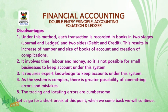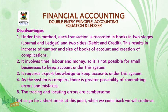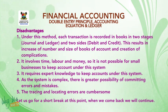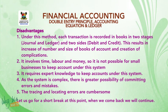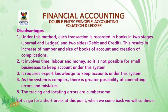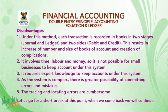Disadvantages. Number one, under this method each transaction is recorded in books in two stages — the journal and the ledger — and two sides, debit and credit. This results in an increase in the number and size of books of account and creation of complications. Number two, it involves time, labor, and money, so it is not possible for small businesses to keep account under this system. Number three, it requires expert knowledge. Number four, as the system is complex, there is a greater possibility of committing errors. Number five, the tracing and locating of errors are cumbersome.